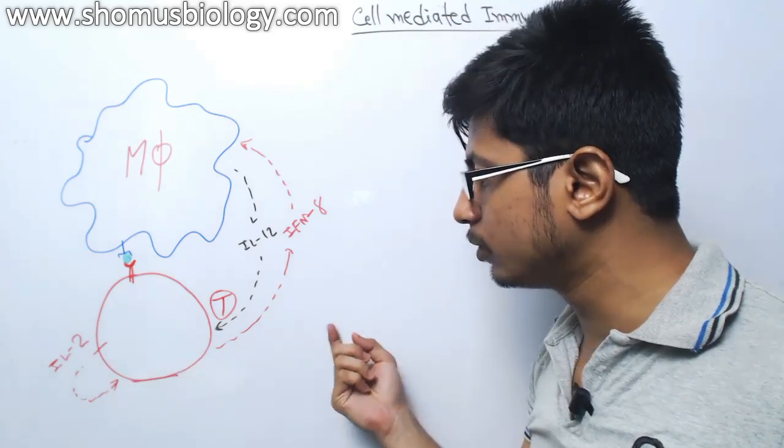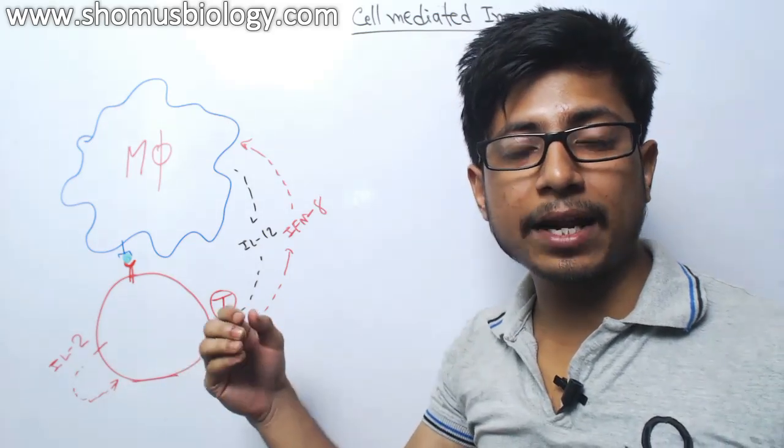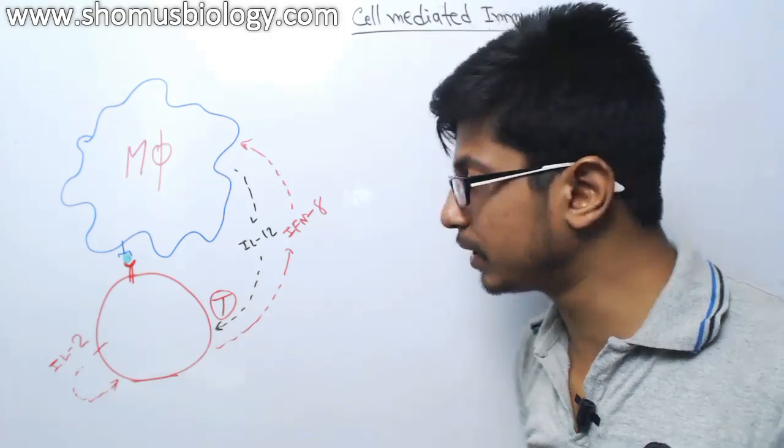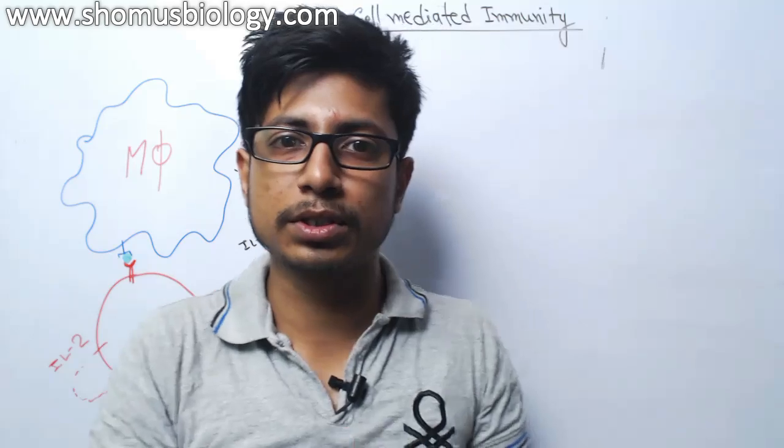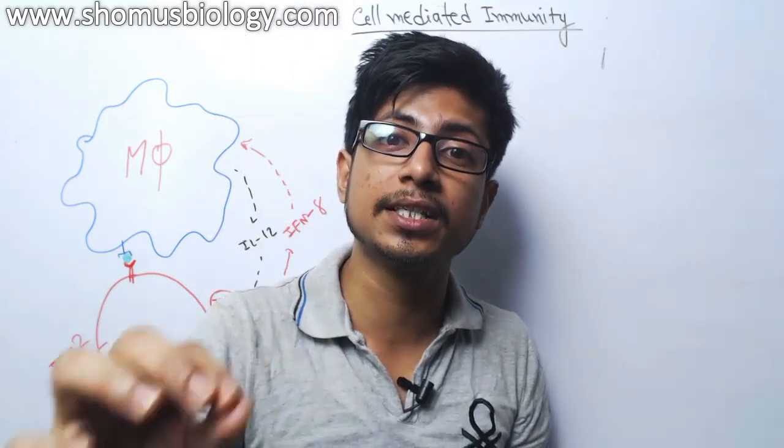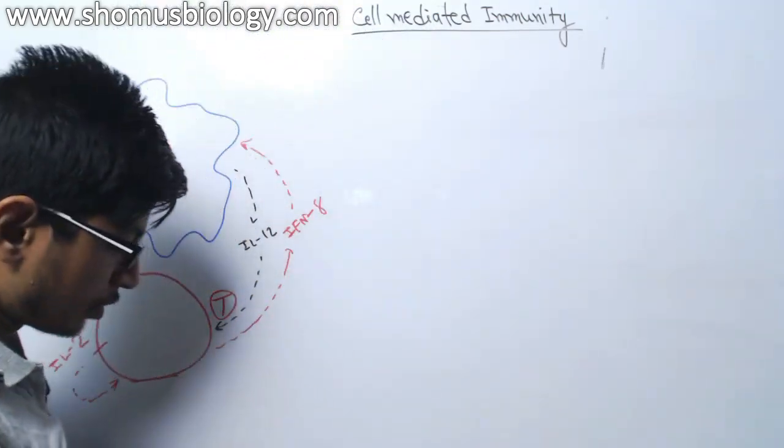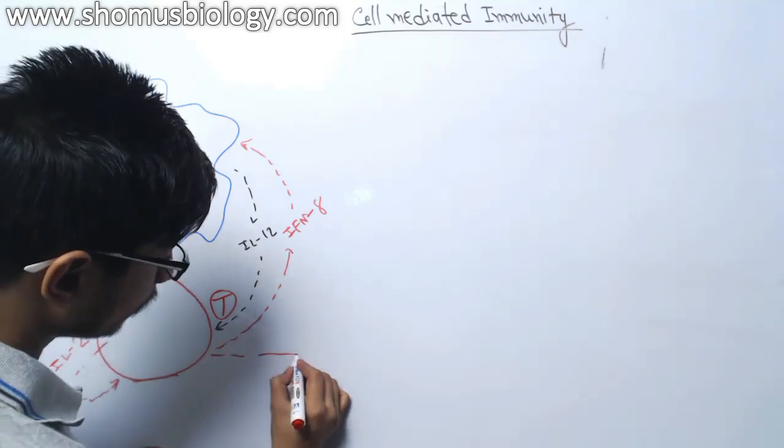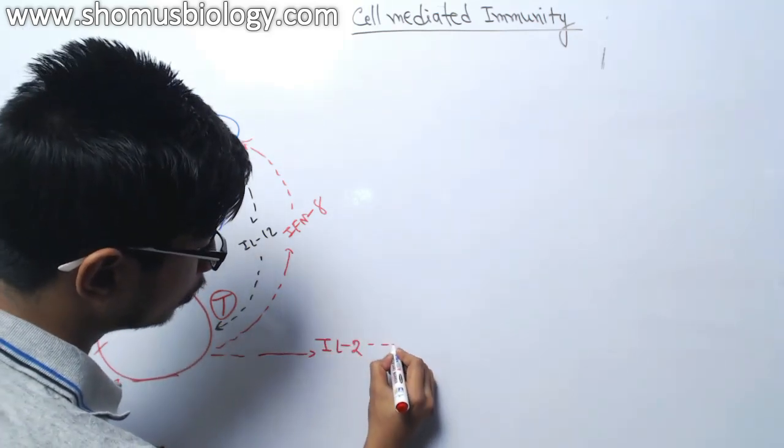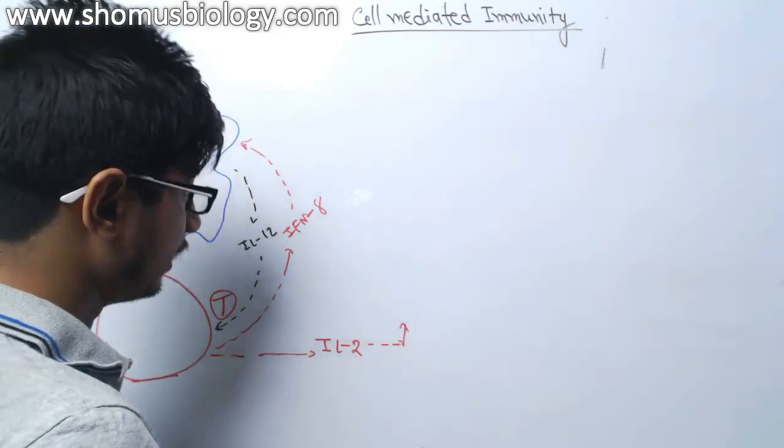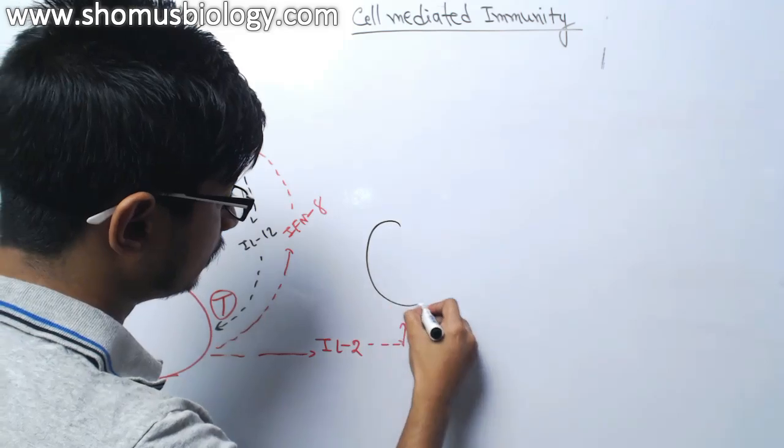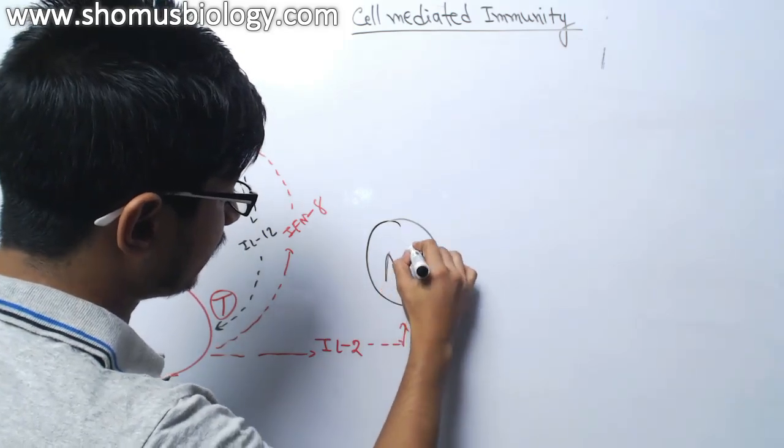That interleukin-2 can also act as a paracrine signaling because that will go and also tell other cells of immune system, for example, natural killer cell to get activated. So let me draw it here, releasing interleukin-2 which will act on natural killer cell. Remember, these are NK cells.